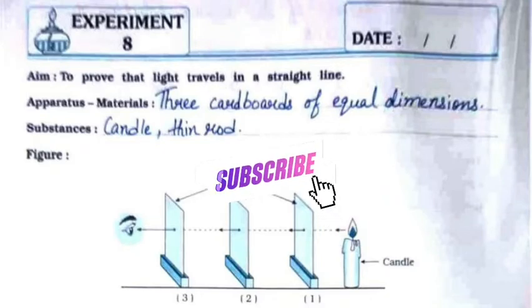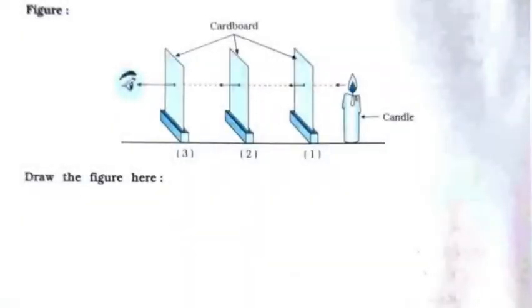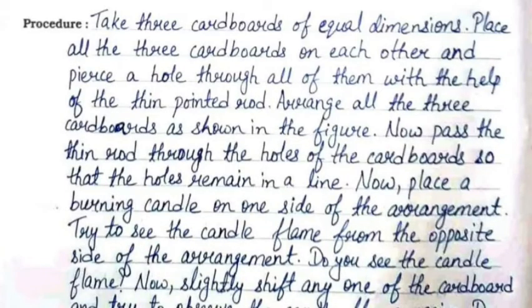Apparatus and materials are 3 cardboards of equal dimensions, and substances to be used are candle and thin rod. You need to draw the same figure just below where the space is given. The procedure is: take 3 cardboards of equal dimensions, place all 3 cardboards on each other and pierce a hole through all of them with the help of the thin pointed rod. Arrange all 3 cardboards as shown in the figure.